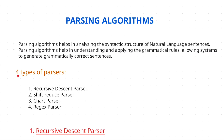To check the syntactic structure we use parsers. The four types are: recursive descent parser, shift-reduce parser, chart parser, and CYK parser. In this video I am going to discuss only the recursive descent parser; in the next video I will cover the remaining three.